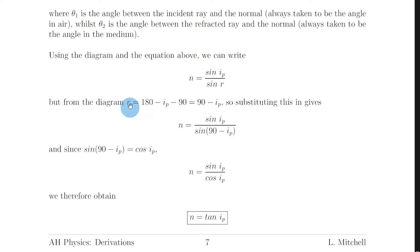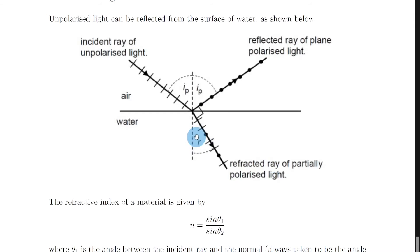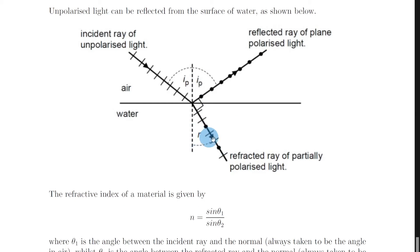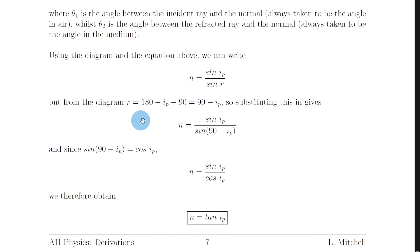Now from the diagram let's have a look at little r. We can rewrite little r in terms of the angles on this right-hand side. In this quadrant we have 90 degrees, and then another 90 degree quadrant on the other side. So to go from the normal on this side all the way around to the normal on the other side we have 180 degrees, i.e. half a circle. So all these angles must add up to 180 degrees: ip plus 90 degrees plus r equals 180 degrees. So r equals 180 minus ip minus 90, which simplifies to 90 minus ip.